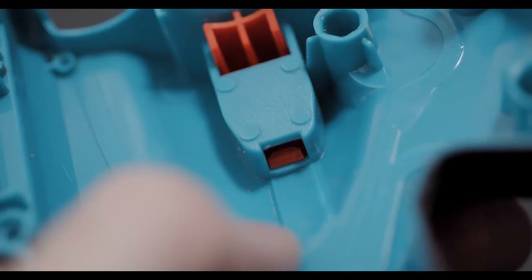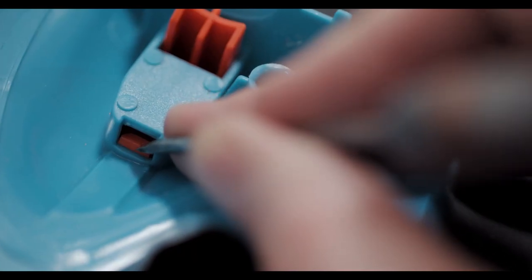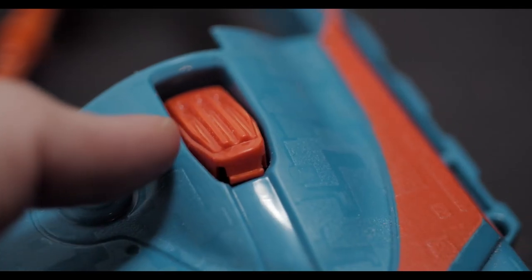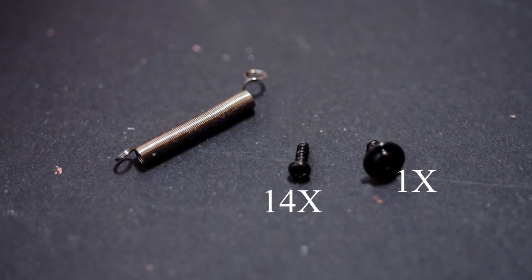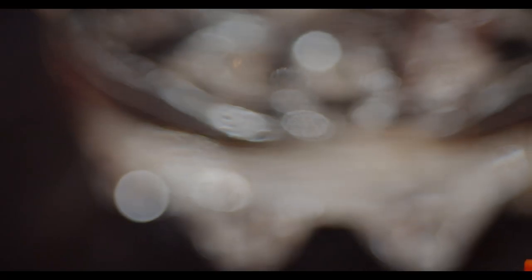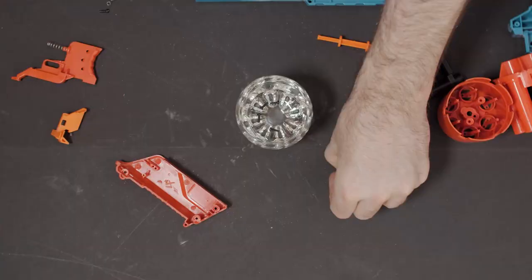The final annoying piece is the button to release the dart chamber which needs to be pressed out with a screwdriver from the inside. Make sure that you don't lose any hardware. All of the screws were fortunately the same size so I just tossed them into the fanciest glass I have. Because why not?